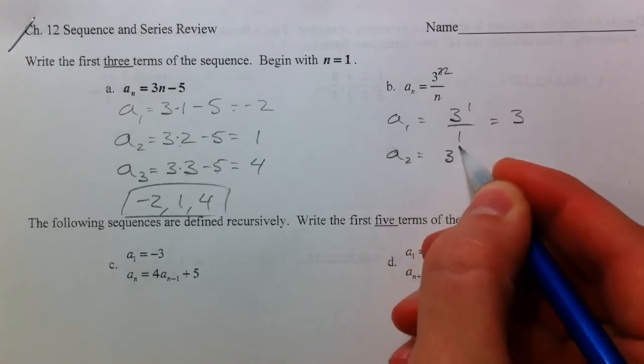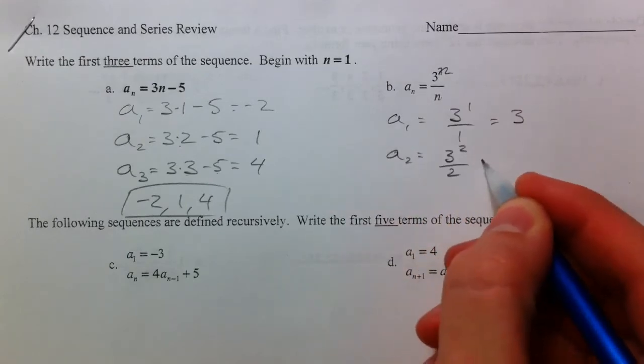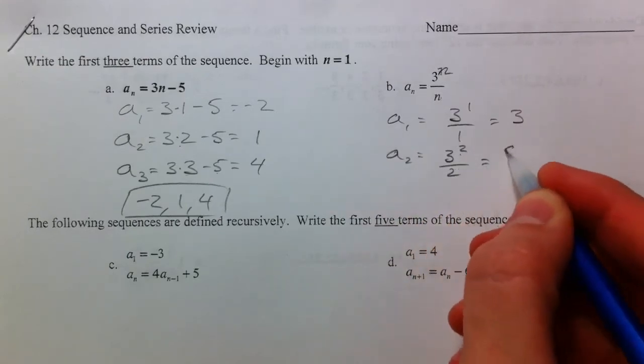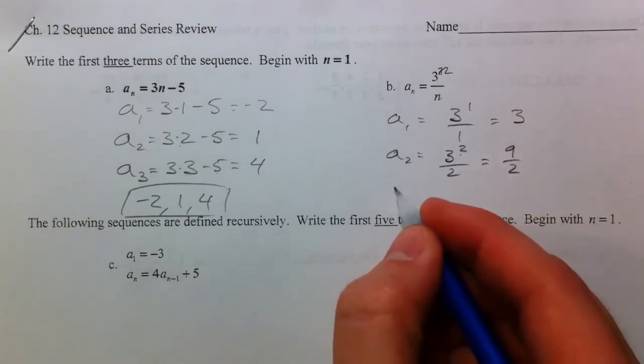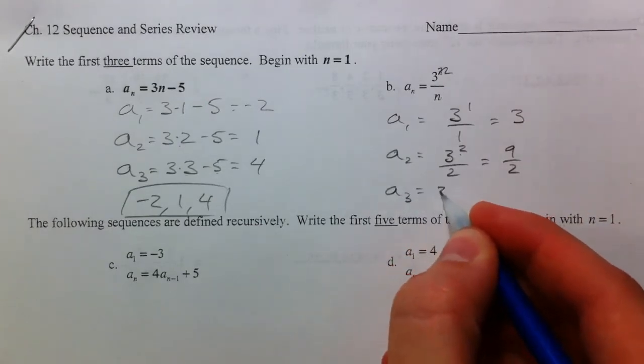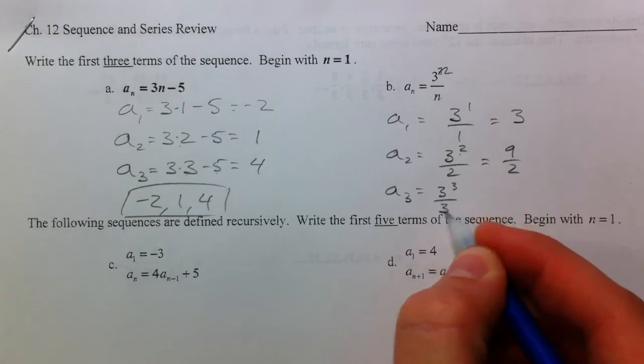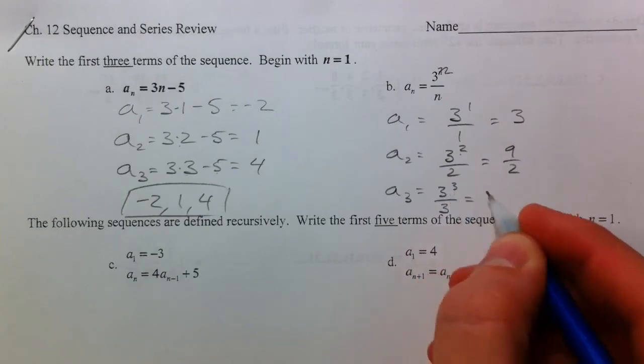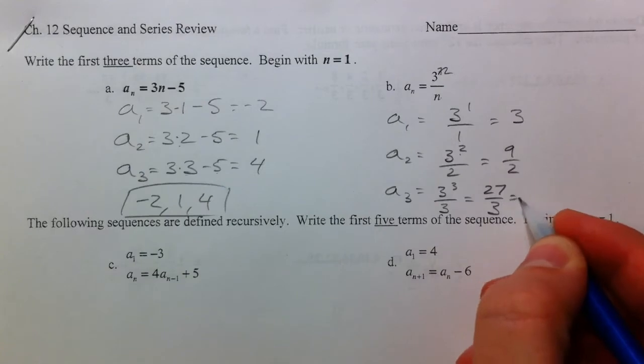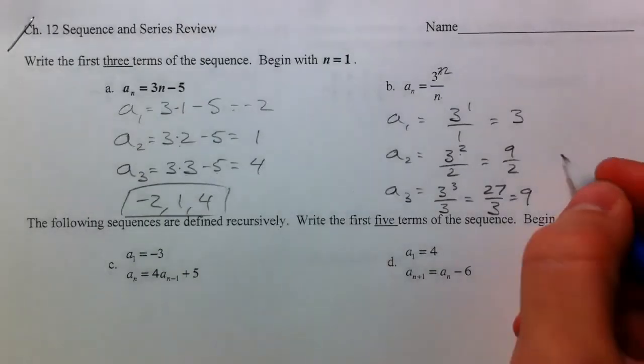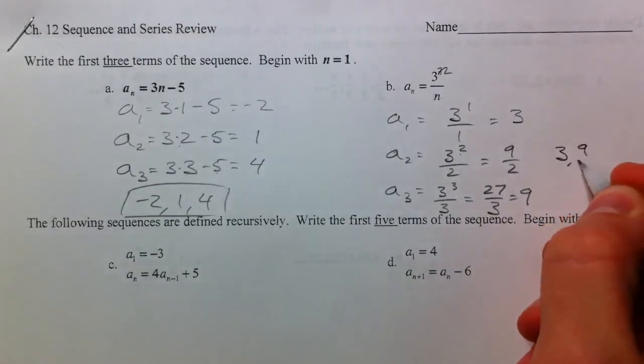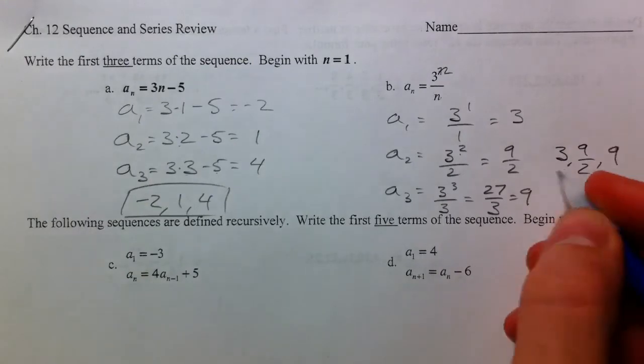Second term, 3 to the second divided by 2. So that is 9 over 2. And our third term, 3 to the third over 3. So 3 times 3 times 3, that's 27 over 3, which is 9. So our first three terms, 3, 9 halves, and 9.